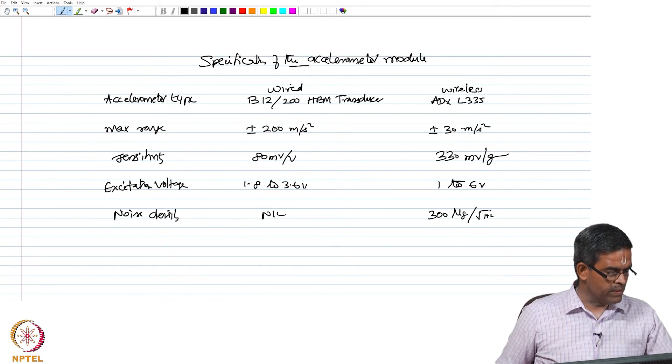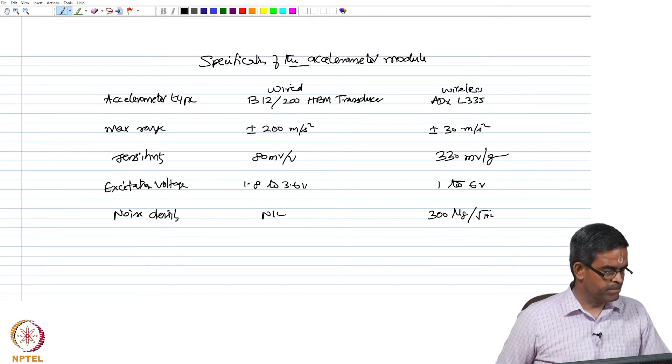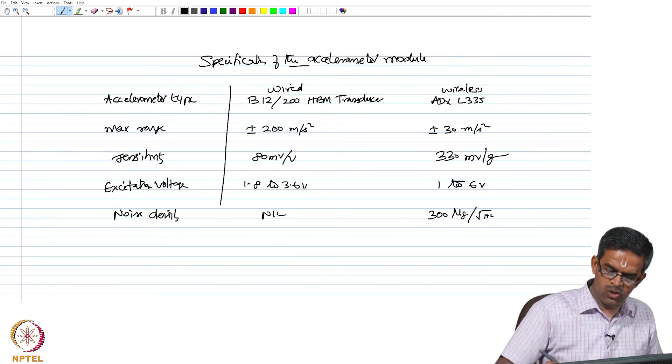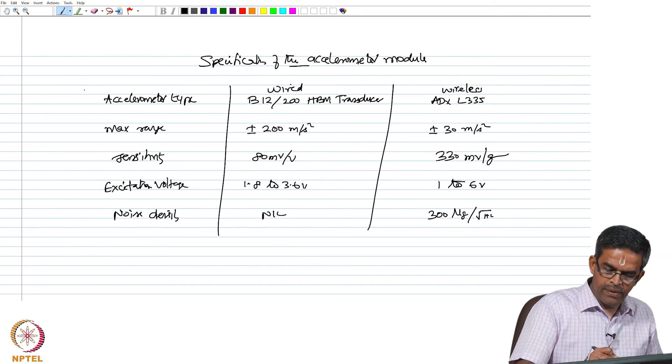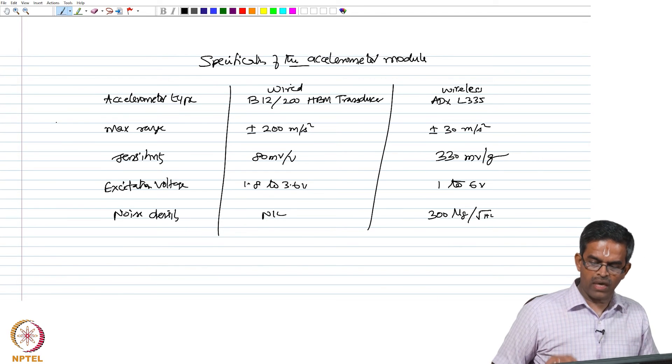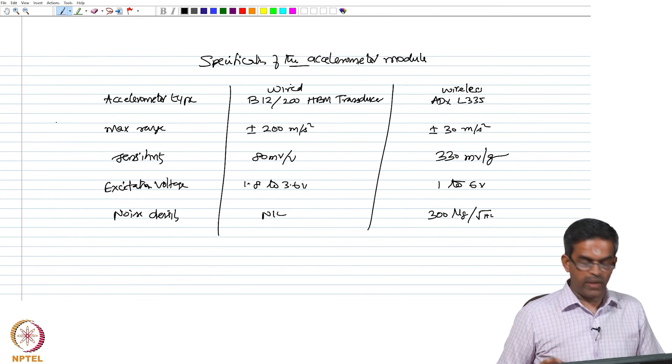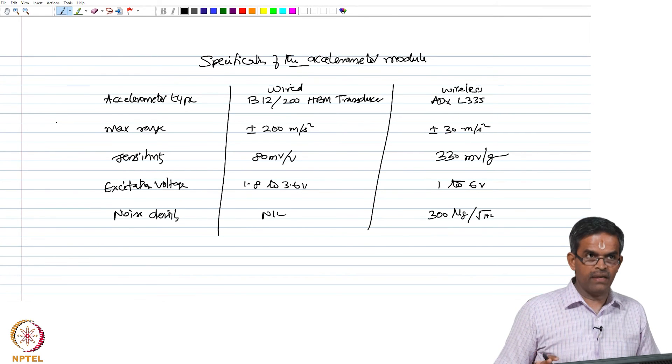This comparison gives an idea of a variety of specifications which are actually used for acquiring the data in both cases of the design. One is wired and the other is wireless, which are happening parallelly in the system.